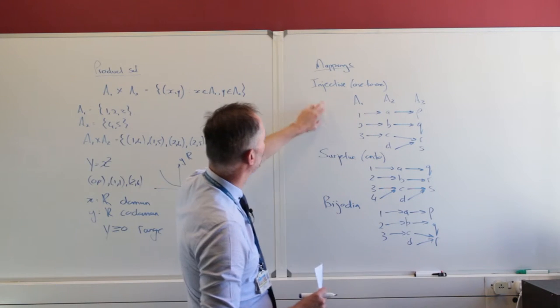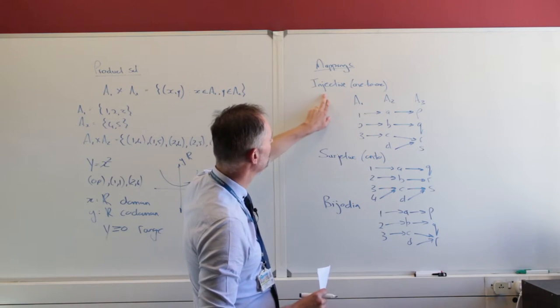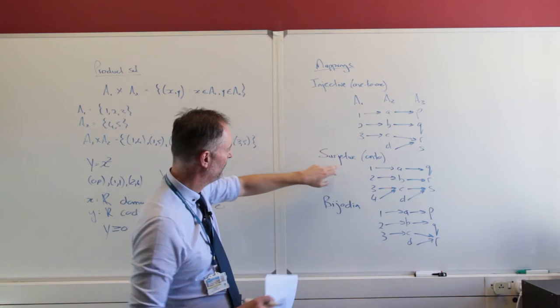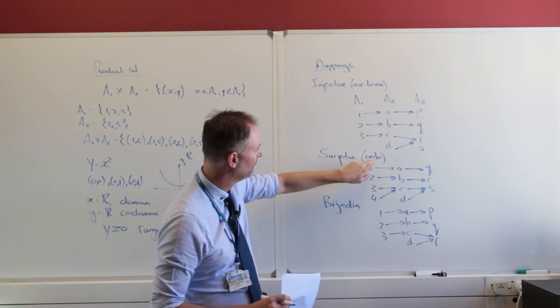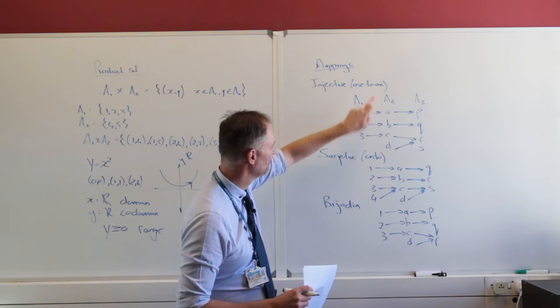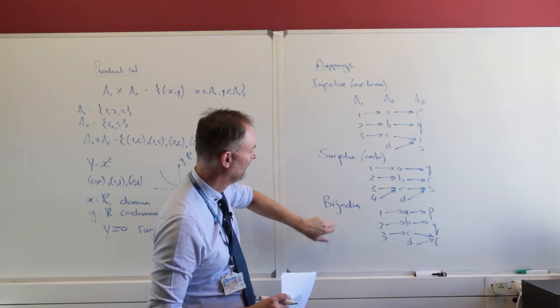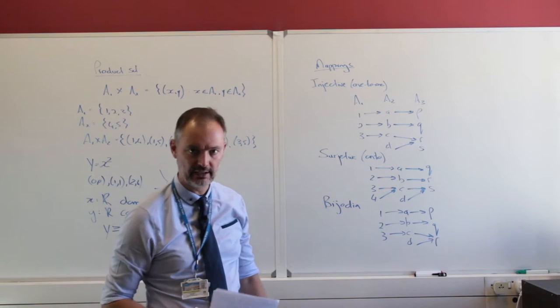Now there are three types of mapping: injective, which we also call one-to-one; surjective, which we call onto; and a bijection.